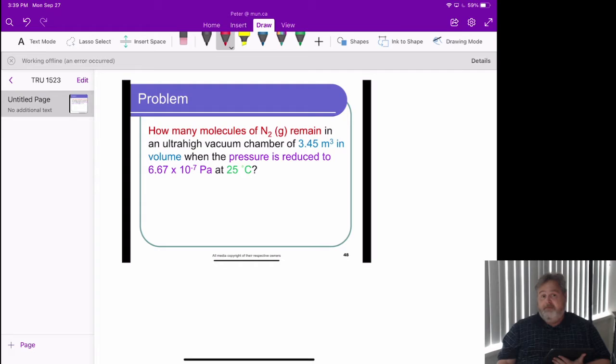So the question is simple, how many molecules of N2 remain in this ultra-high vacuum chamber with a volume of 3.45 cubic meters, which is a pretty large volume, where the pressure has been reduced to 6.67 times 10 to the minus 7 pascal, which is a fairly low pressure.